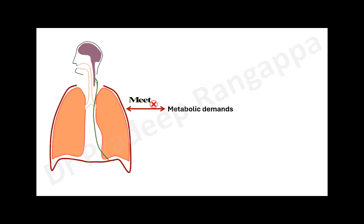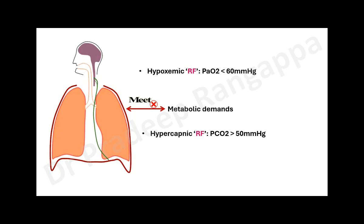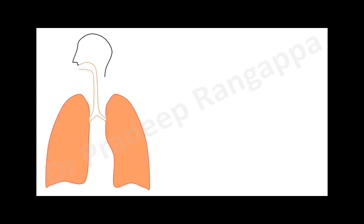There are two types of respiratory failure. One is hypoxemic respiratory failure, where by definition your PaO2 is less than 60 mmHg. Then there is hypercapnic respiratory failure, where PaCO2 is more than 50 mmHg. These are the two broad categories when we talk about respiratory failure.